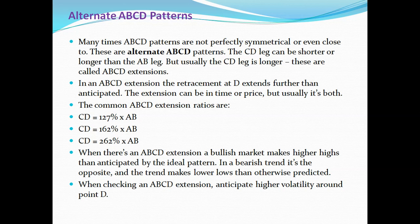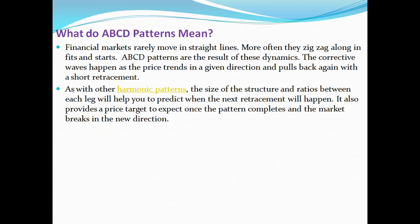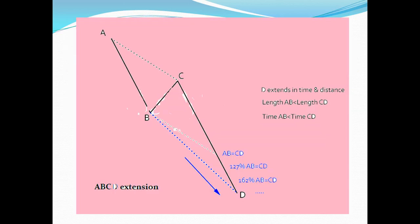What do ABCD patterns mean? Financial markets rarely move in straight lines — more often they zigzag in fits and starts. ABCD patterns are the result of dynamics of corrective waves that happen in the price trend — the price moves in a given direction, pulls back with a short retracement, and continues. As with other harmonic patterns, the size of the structure and the ratio between each leg will help you predict when the next retracement will happen. It provides a price target to expect once the pattern completes and the market breaks in a new direction.